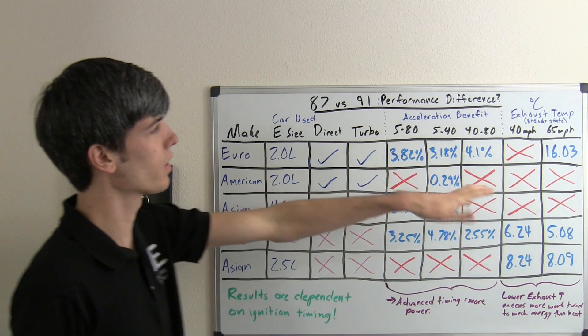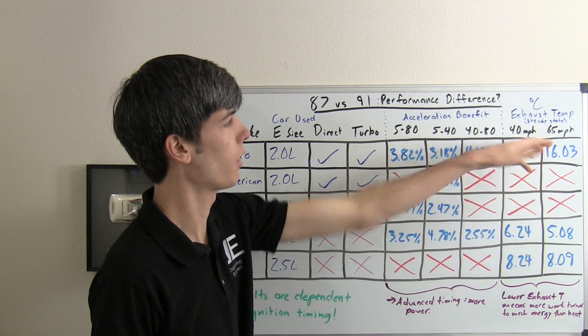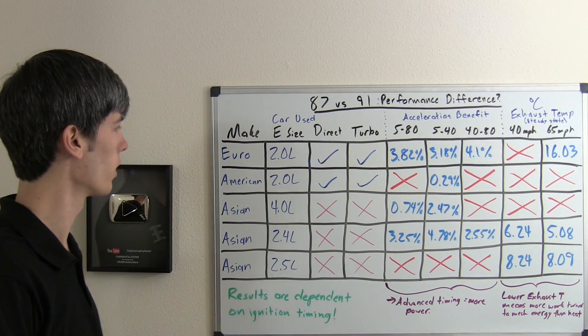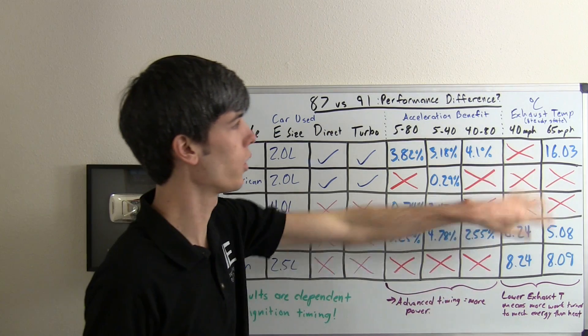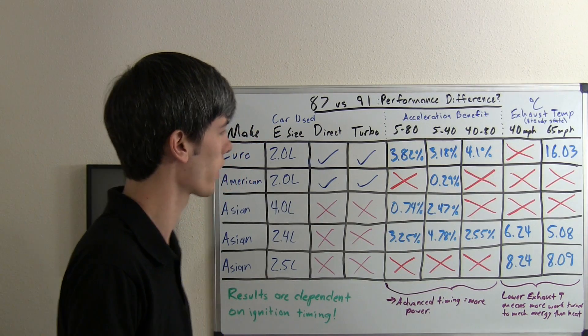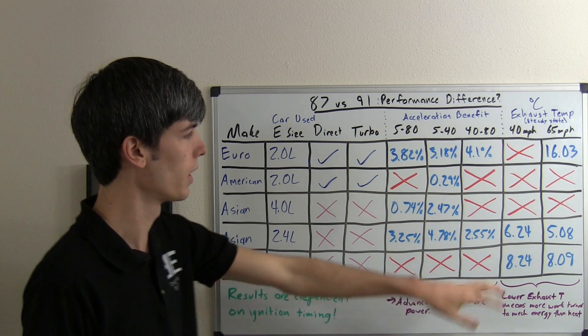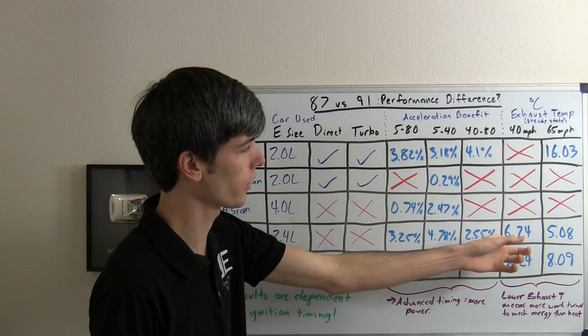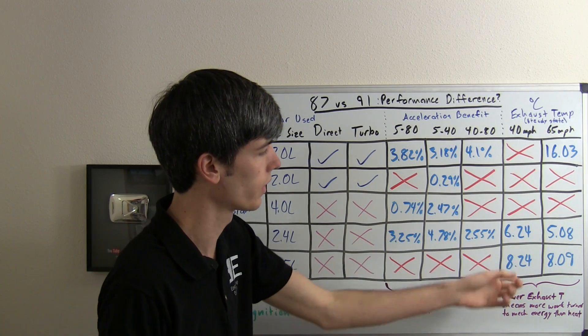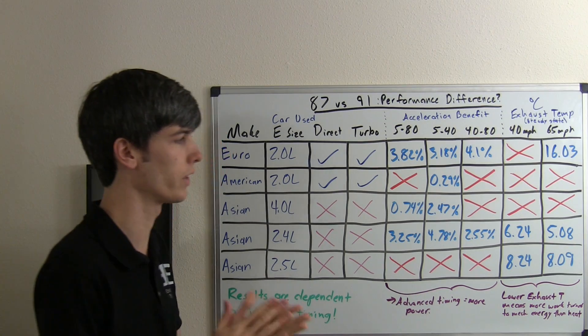Looking at the results, the European car was able to lower exhaust gas temperatures by 16 degrees when traveling at 65 miles per hour. Both the American and the initial Asian vehicle showed no significant differences in exhaust gas temperatures. Both of the remaining Asian vehicles saw improvements: 6.24 degrees Celsius, up to 8.24 degrees Celsius on the 2.5 liter Asian vehicle.